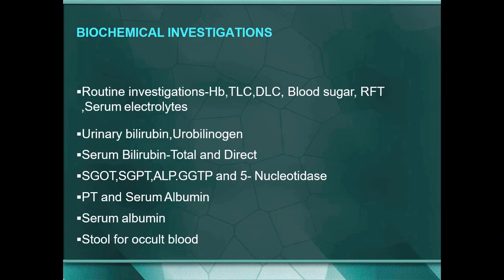Certain investigations must be done. Routine investigations include hemoglobin, total leukocyte count, differential leukocyte count, and for patient fitness: blood sugar, renal function tests, and serum electrolytes as baseline. Urine will show bilirubin or urobilinogen. Serum bilirubin — total and direct — will both be raised. A key distinction: in obstructive jaundice the enzymes raised are alkaline phosphatase and gamma-GT; but in hepatitis — medical or non-obstructive jaundice — SGOT and SGPT will be raised.